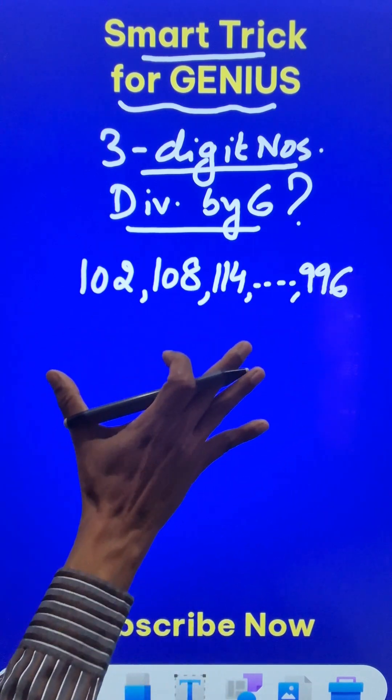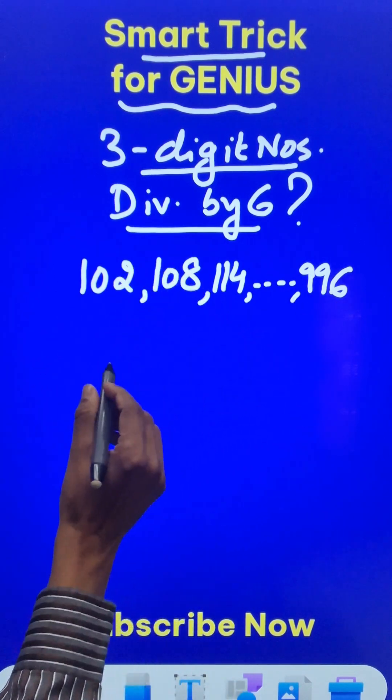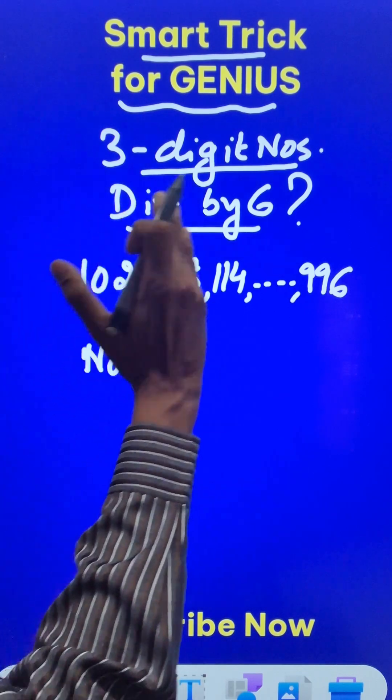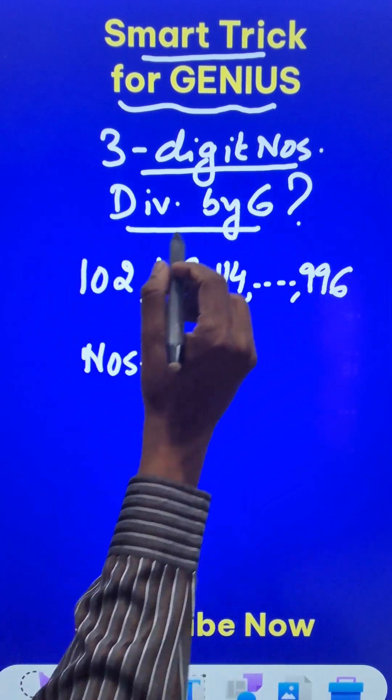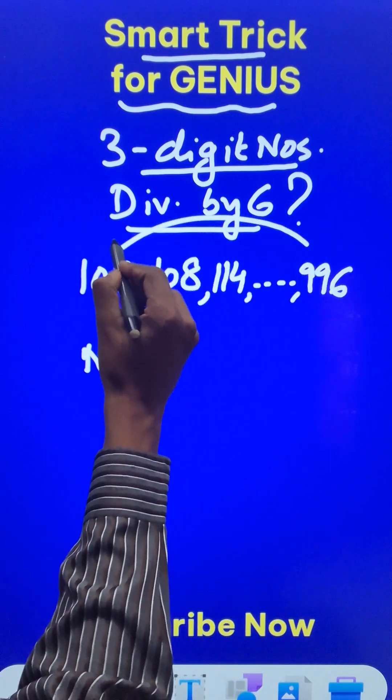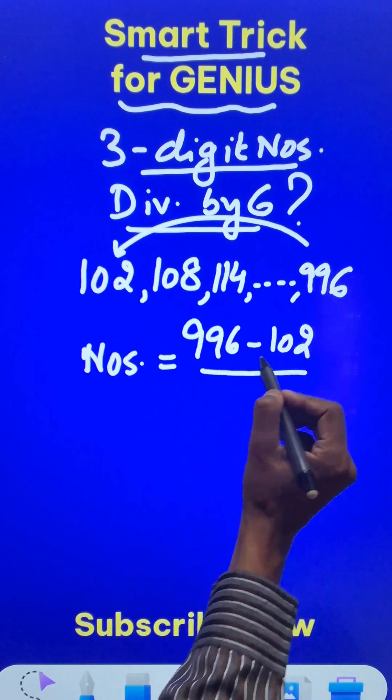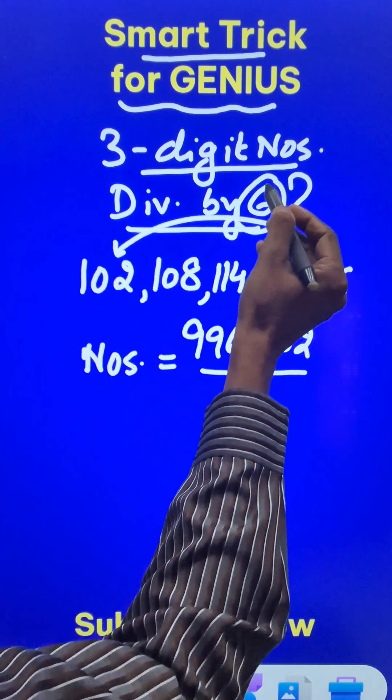So most students will apply AP here, but let's solve this directly. The number of numbers which lie between 100 and 1000 which are divisible by 6 can be found directly by subtracting like this: 996 minus 102, and dividing it by 6.